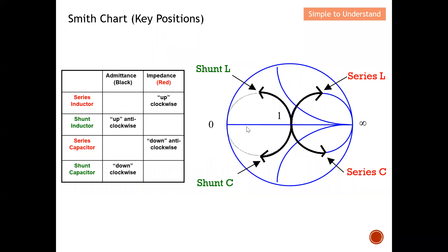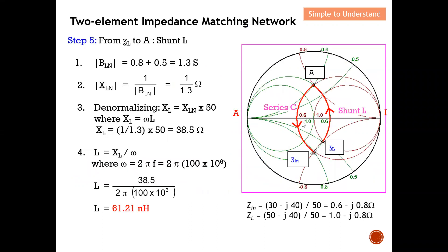Before drawing, let's review the Smith chart movement rules. For a shunt L, the movement is up and anticlockwise. For a series C, the movement is down and anticlockwise. So from Z_L, I first go shunt L — anticlockwise up — then series C — anticlockwise down — and finally I reach Z_in.